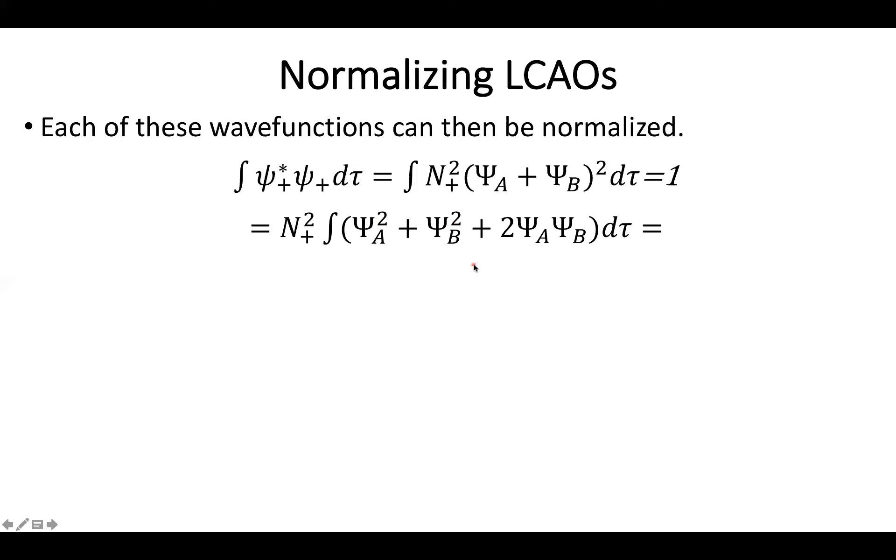So we end up with the wave function of A squared, the wave function of B squared, and two times the combined wave function. Because these wave functions for the hydrogen 1s orbital are real, I went ahead and dropped the complex conjugate because turns out we don't need it in this case.